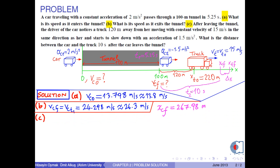Also, the position of the truck 10 seconds after the car leaves the tunnel is found by this formula. With the corresponding numerical values, we calculate it as 370 meters.